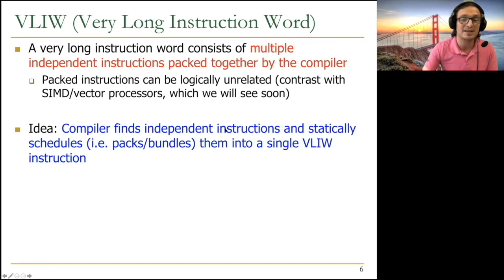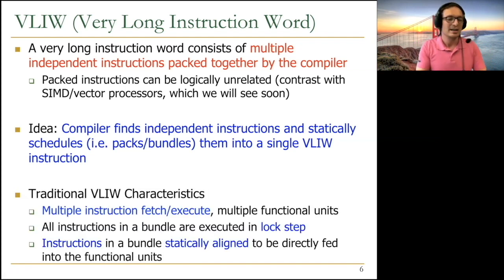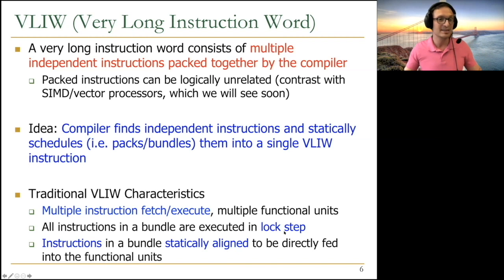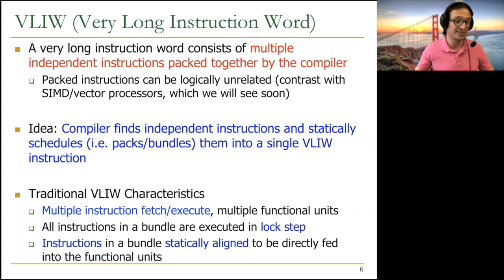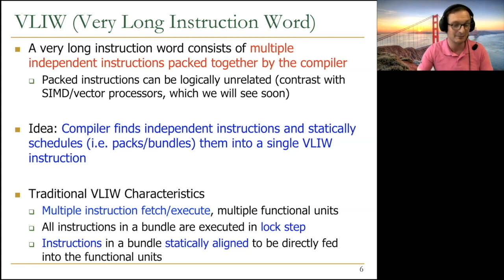The compiler finds independent instructions and statically schedules — packs or bundles — them into a single VLIW instruction. Traditional VLIW characteristics include: fetching and executing multiple instructions, requiring multiple functional units. Also, all instructions in a bundle are executed in lockstep. If one instruction gets delayed due to a dependency, all instructions wait until they can move to the next pipeline stage — a characteristic that has limited performance.